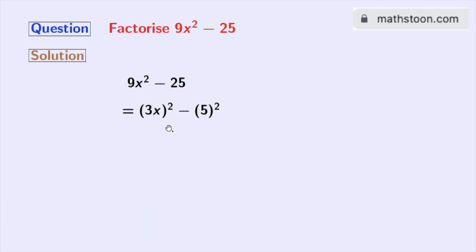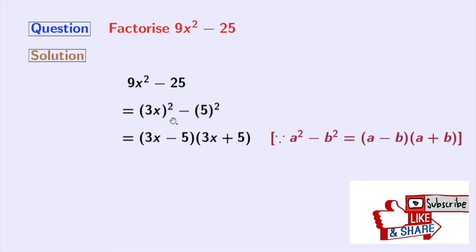Now look that this is in the form of a square minus b square, where a is 3x and b is 5. So we can easily apply the formula of a square minus b square in this expression.